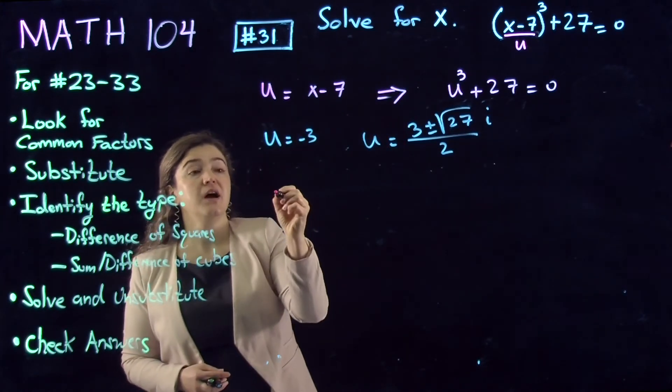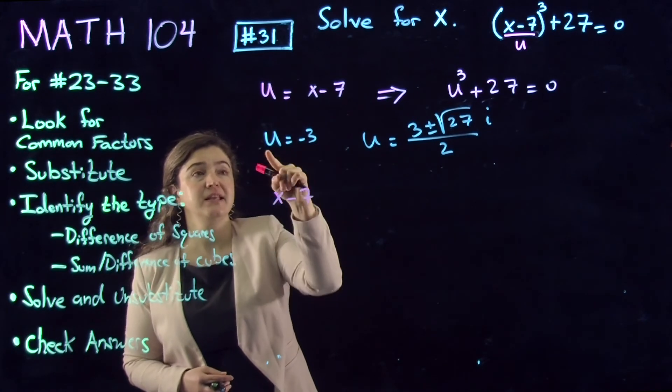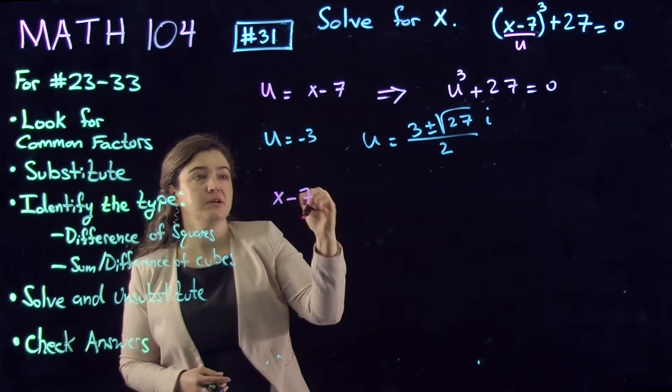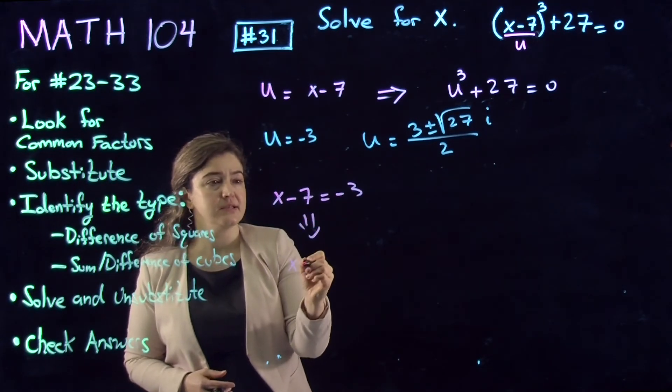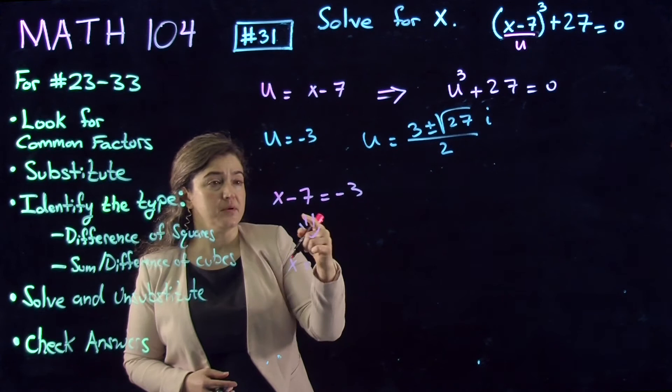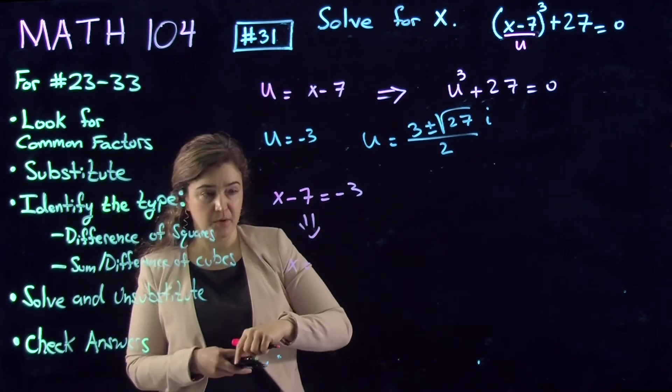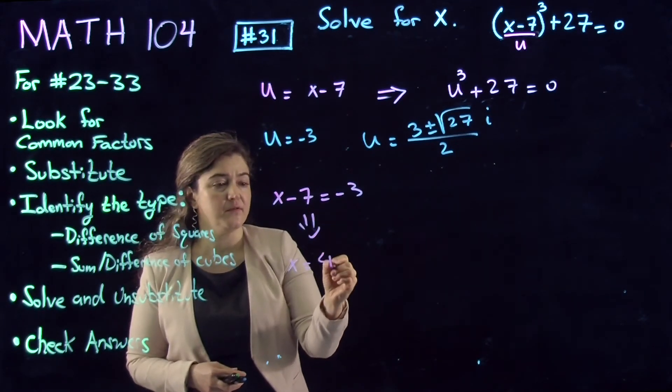So the first one: I plug in x-7 instead of u. x-7 = -3. What I get is x = 7. Add 7 to both sides and you get 4. So that's the first solution.